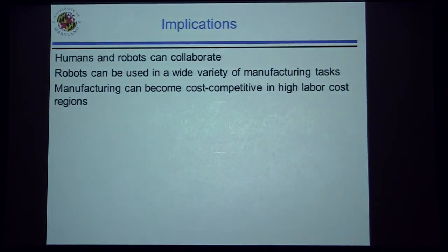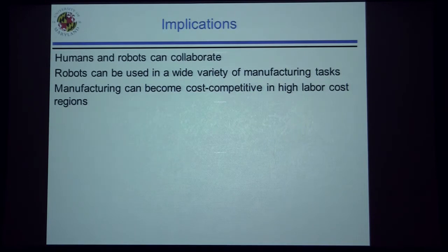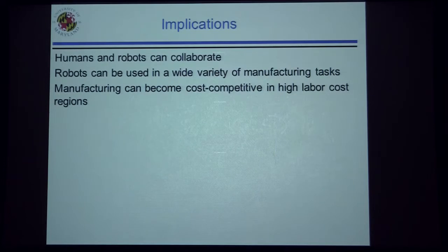These new innovations in robotics mean that humans and robots can collaborate rather than being in separate areas doing individual tasks. Robots can now be used in a wide variety of manufacturing tasks, not just a few high-production-run tasks. If robots and humans work together — robots doing what they're good at and humans doing what they're good at — overall manufacturing can become competitive in high labor cost markets by bringing net labor costs down.